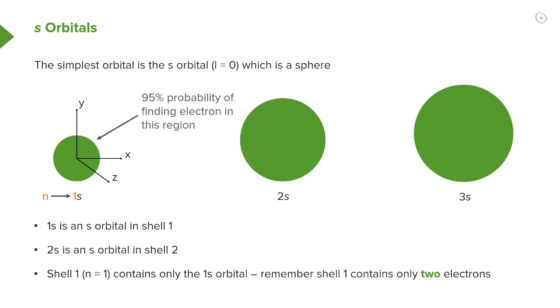Here, you can see three particular types or shells of orbital. The 1s, the 2s and the 3s. Each of these is spherical. But as you can see, each of these is of a different size.